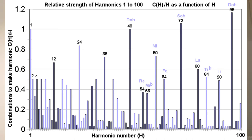Every single thing that's been studied that has records over a period of time has been found to have cycles. The different common cycles found in different things often have the same frequencies, and in other things often have frequencies related to them by proportions of two and three.